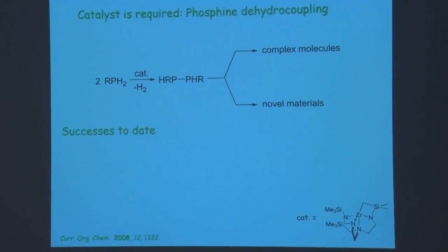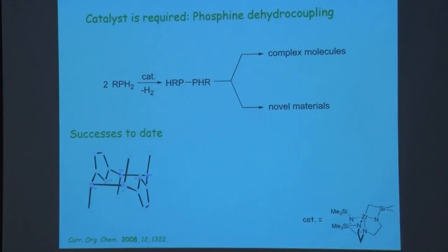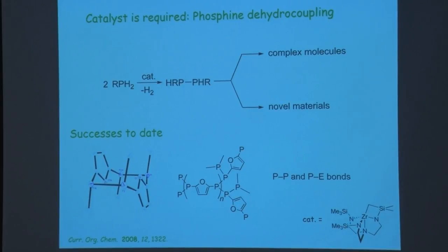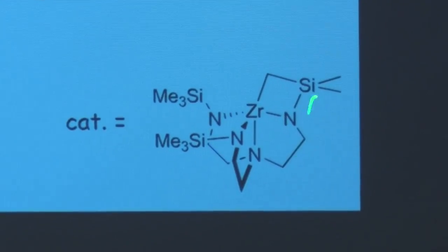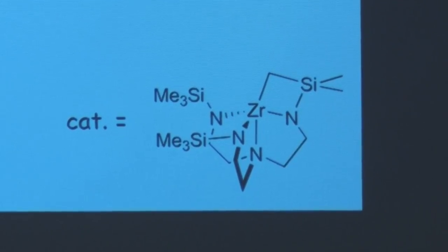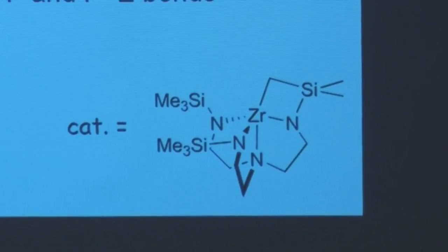We have been able to make unusual and complex molecular structures, make polymers that have phosphorus repeating in the main chain — a somewhat rare system with potentially interesting electronic properties — and build phosphorus-phosphorus and phosphorus-element bonds using this technique. It's all rested on a zirconium compound supported by an organic ligand: a tris(aminoethyl)amine, which we can make in a single step from near-commercial precursors.